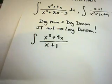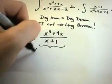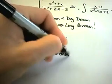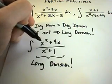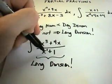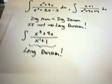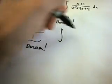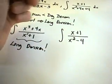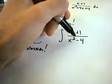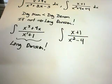By the time people get to partial fractions they've often forgotten long division, so feel free to review that. In this example, the highest power on top is 3 and on the bottom is 1, so the degree of the numerator is bigger — you must do long division if the numerator degree is greater than or equal to the denominator degree. On the other hand, something like x plus 1 over x squared minus 4 is fine because the numerator degree is smaller, so we can proceed with partial fractions.